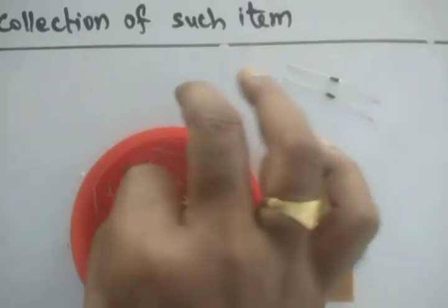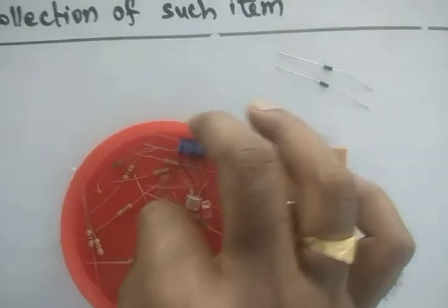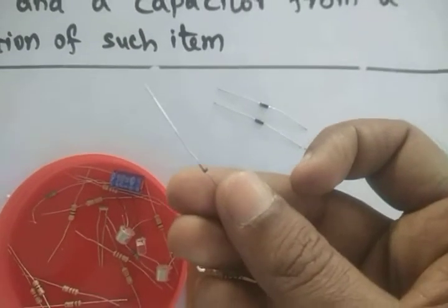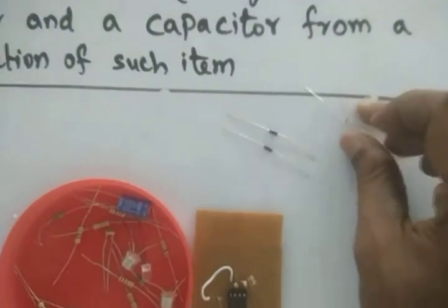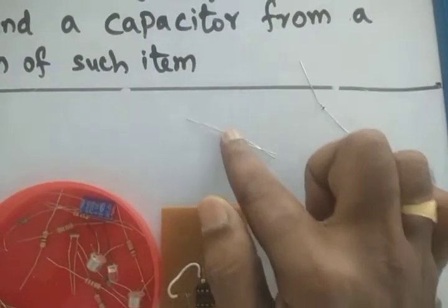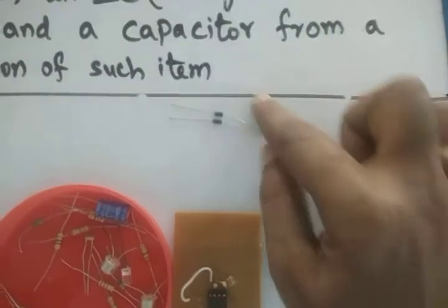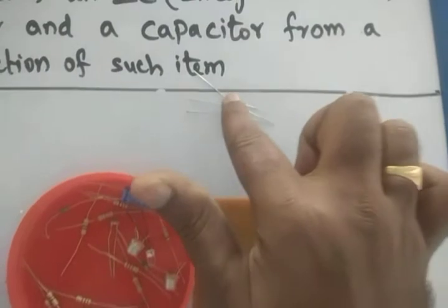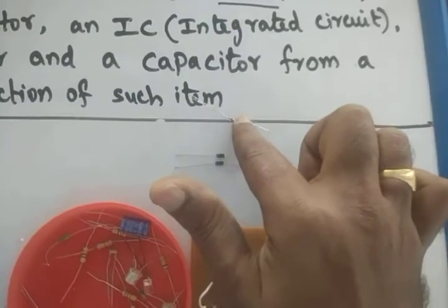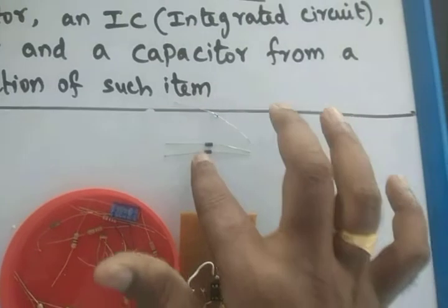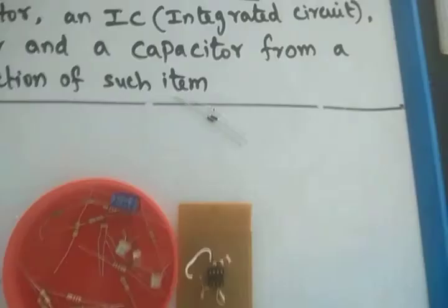Then there is another diode — a Zener diode. This Zener diode has a black color line with a glass covering. So these three are diodes in total: two PN junction semiconductor diodes and one Zener diode. The PN diode works on forward bias, while the Zener diode works in reverse bias and is used for voltage regulators.